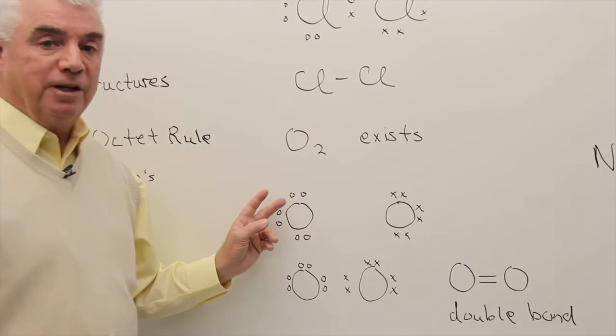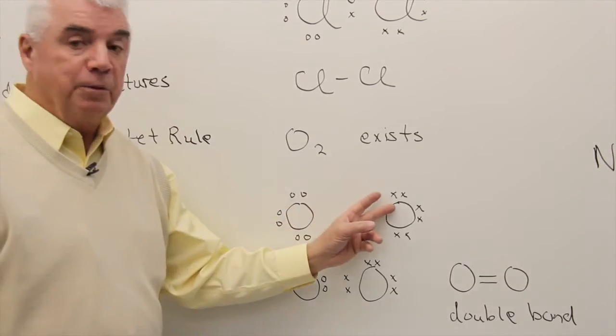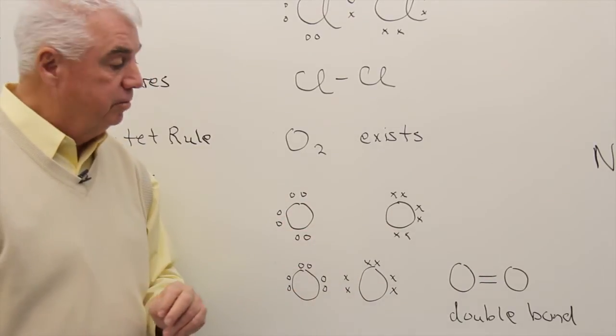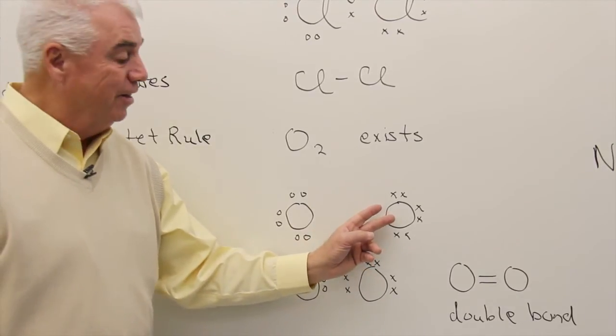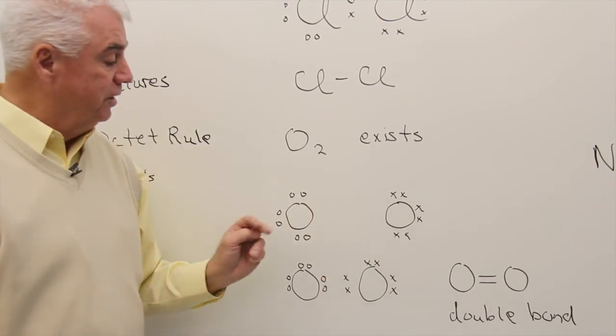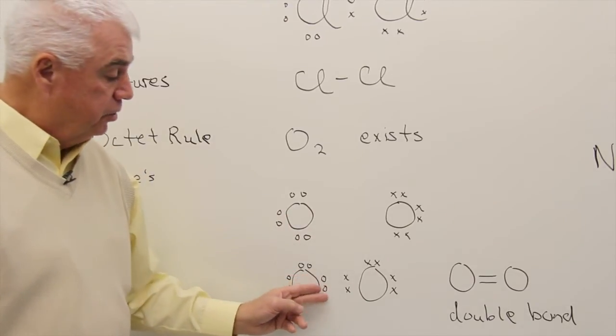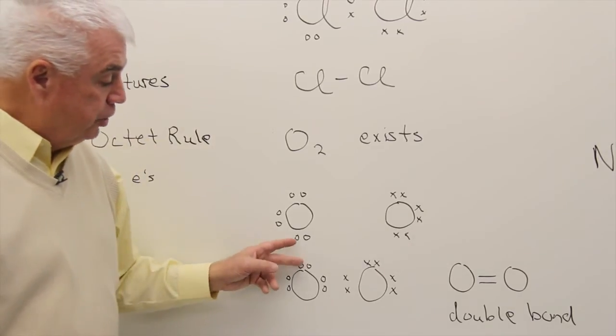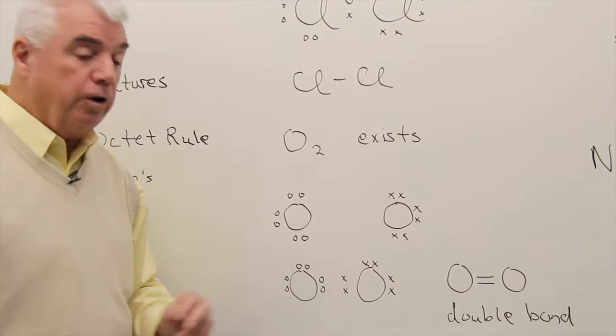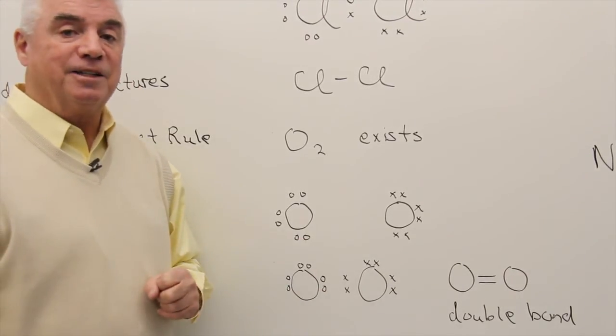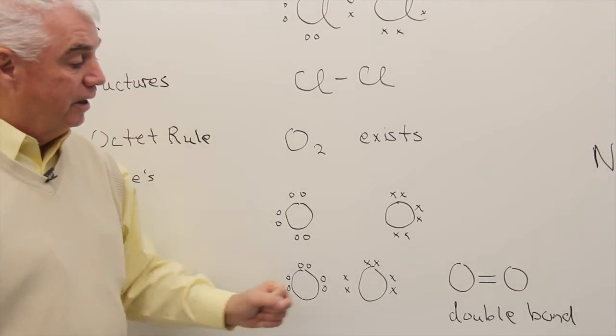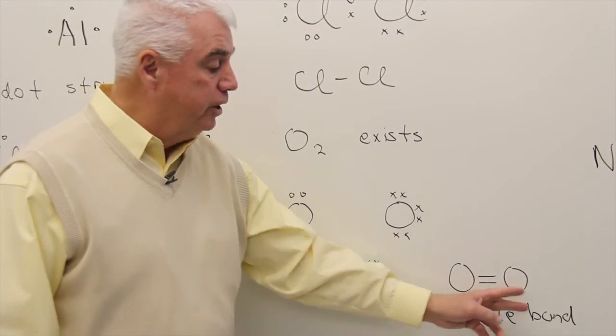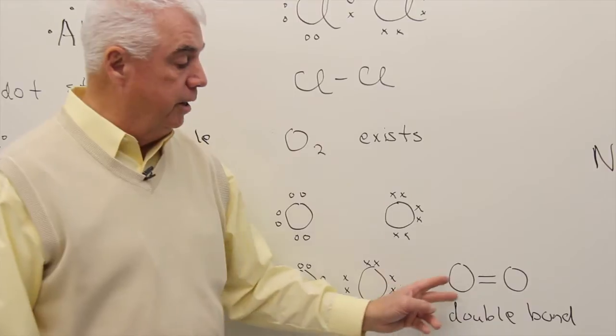The only way this one can get two more electrons is from its neighbor. And so we'll put two X's in the middle. And the same thing is true of this oxygen. The only way it can get two more electrons is from this neighbor. So here I've placed four electrons between these two oxygen atoms. They each have four of their own and four that are being shared. They think that they have eight and satisfy the octet rule. The sharing of four electrons could be represented by two dashes. We'd call it a double bond or a covalent double bond.